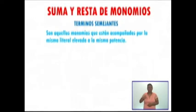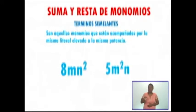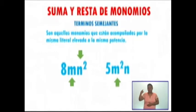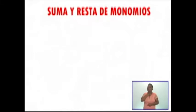Aquí tengo 8mn cuadrada y 5m cuadrada n. A pesar de que tienen las mismas literales, están elevadas a diferentes potencias. Por ejemplo, aquí la m está elevada a la primera potencia y acá a la segunda; aquí la n está elevada a la segunda potencia y acá a la primera. Por lo tanto, no son términos semejantes. Ahora sí, vamos a ver unos ejemplos de suma y resta de monomios.